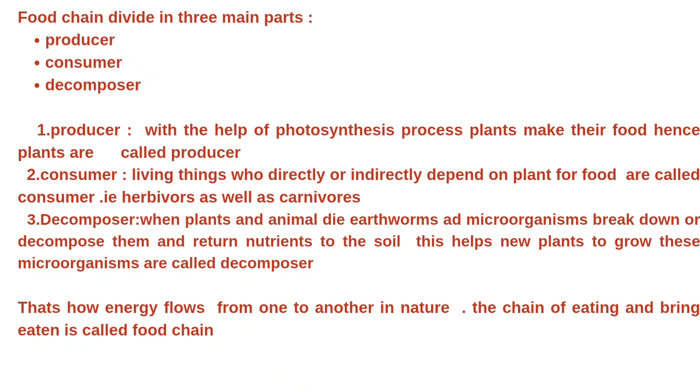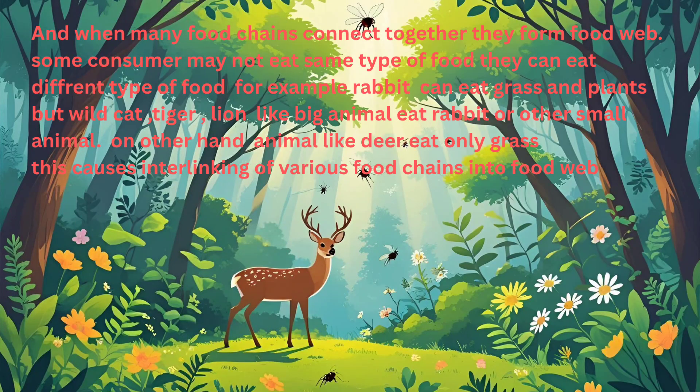That's how energy flows from one to another in nature. The chain of eating and being eaten is called a food chain. And when many food chains connect together, they form a food web. Some consumers may not eat the same type of food — they can eat different types. For example, a rabbit can eat grass and plants, but big animals like wild cats, tigers, and lions eat rabbits or other small animals. On the other hand, animals like deer eat only grass. This causes the interlinking of various food chains into a food web.